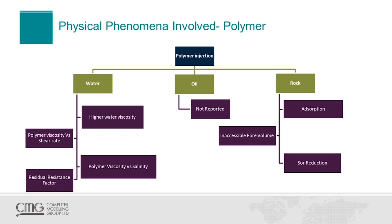The second effect is the inaccessible pore volume. Since the polymer is a big molecule, it cannot reach the whole pore volume. There are certain pores or volumes that cannot be affected by the polymer, and we need to measure that and introduce it in the simulators.